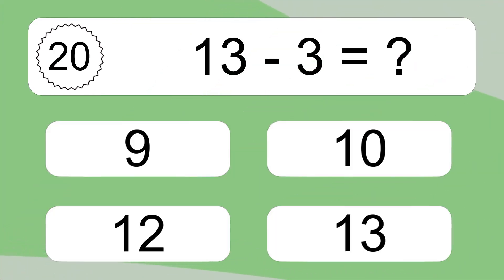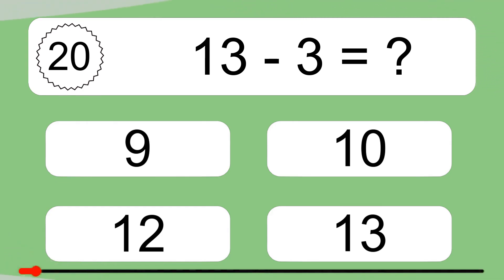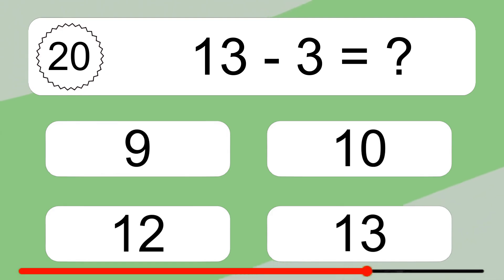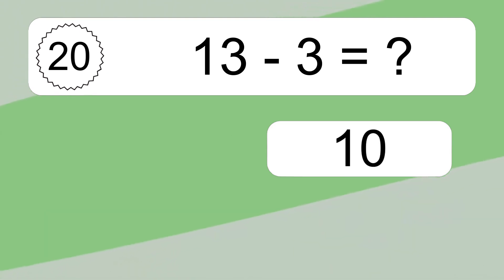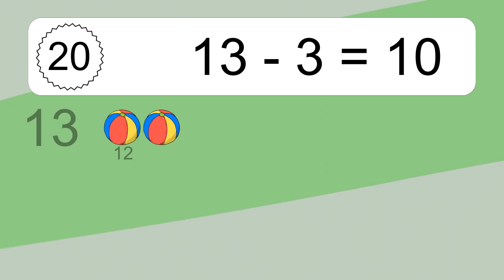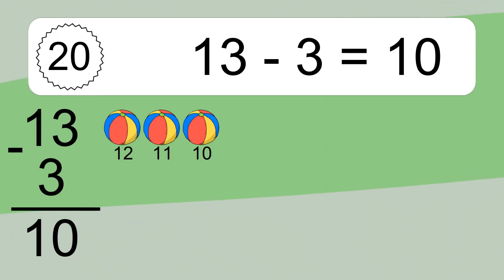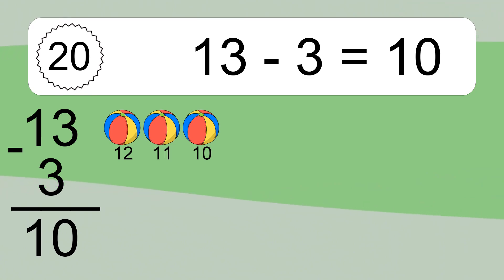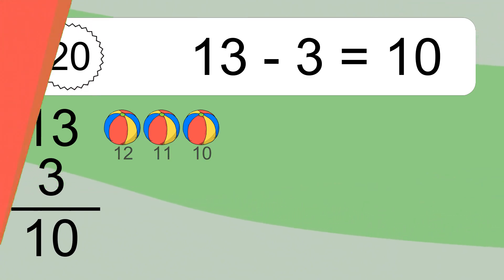13 minus 8 equals 5. Let's count it: 12, 11, 10, 9, 8, 7, 6, 5. 13 minus 3 equals what? 13 minus 3 equals 10. Let's count it: 12, 11, 10.